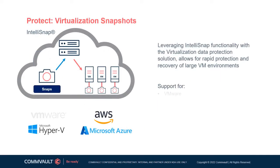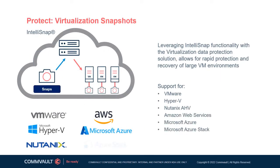By combining the power of Commvault's virtualization data protection solution with Commvault IntelliSnap functionality, very large virtual environments can be protected in a highly efficient manner. By snapping a data store within a virtual environment for a protection copy and then conducting processing on the snapshot as opposed to the live production volume, overhead on the virtual machines can be minimized. Virtual server protection with IntelliSnap is supported for VMware, Hyper-V, Nutanix Acropolis environments, as well as both AWS, Microsoft Azure, and Azure Stack.